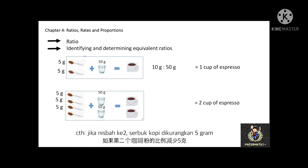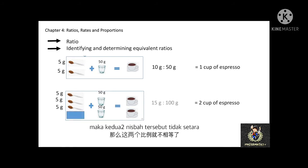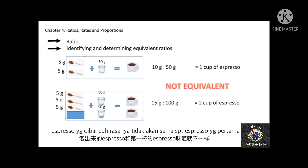One more example: if I reduce one teaspoon of coffee powder when making two cups of coffee, will these two cups have the same taste as the first cup? Obviously, the answer is no, because their ratios are not equivalent to each other.